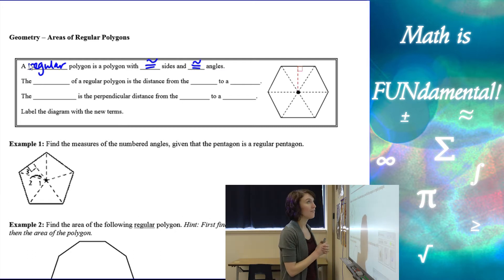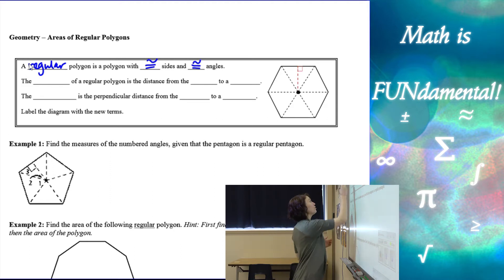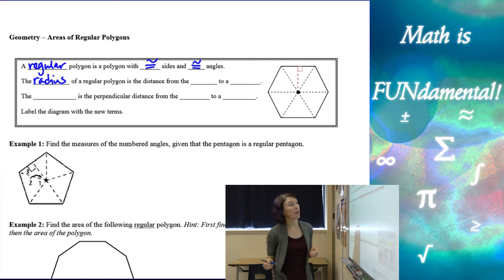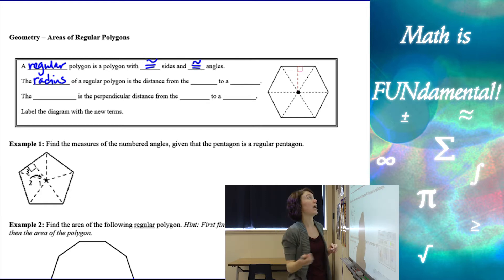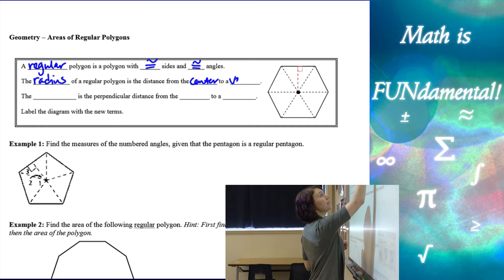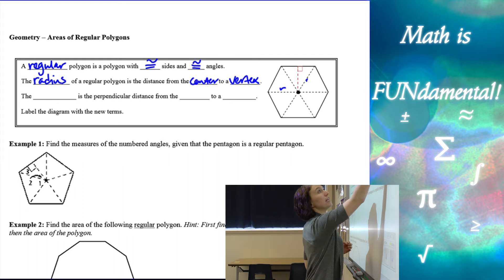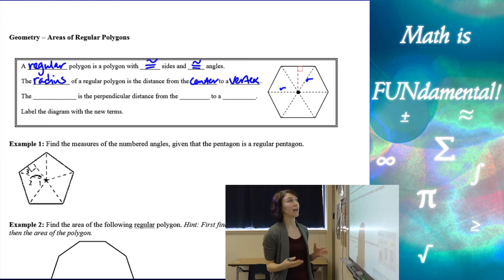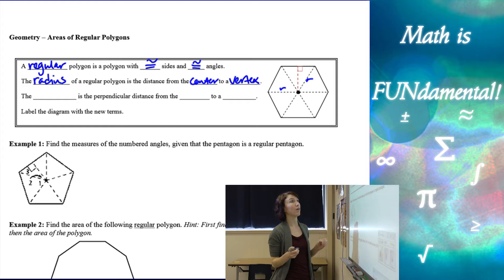Here we have a few new definitions inside the regular polygon. The radius of a regular polygon is kind of like the radius of a circle — it goes from the middle out to the edge, but here we have to be more specific. It goes from the center to specifically a vertex. So these here would be radii — from the center to the vertex of our polygon.